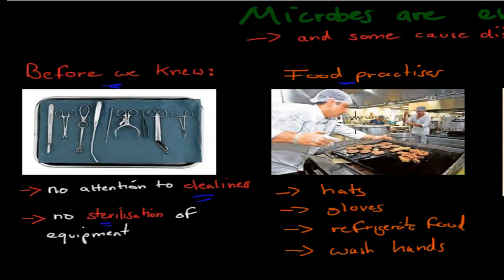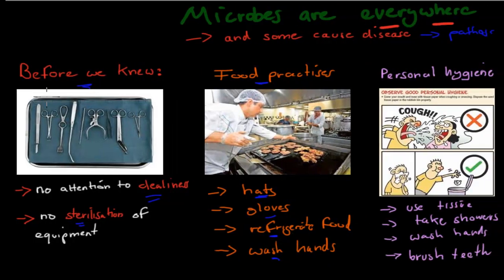When it comes to food practices, you often see people in kitchens wearing hats or gloves — that's standard practice. It makes sure pathogens don't go from the skin onto food, because otherwise they might end up in someone else's mouth and cause disease. We refrigerate food because pathogens in the air can end up in food, and if we don't keep it cold, they might grow on it. We wash our hands when dealing with food to remove any potentially harmful pathogens from our skin. We also make sure we have good personal hygiene — for example, not coughing in someone's face, using a tissue, and disposing of it properly.